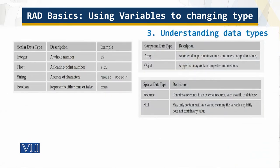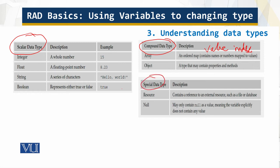There are eight data types used in PHP. These include scalar data types, which consist of a single value, and compound data types, which can consist of multiple values — for example, an array, where a value is stored at a specific index. Then there are special data types. Overall, there are eight different data types, which makes PHP very versatile for web programming.